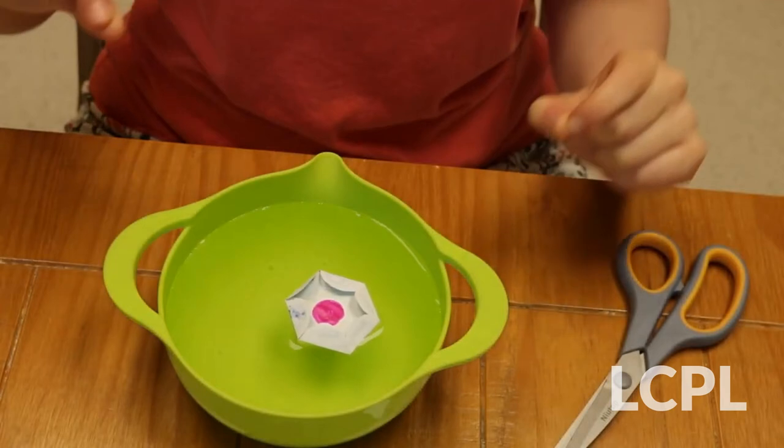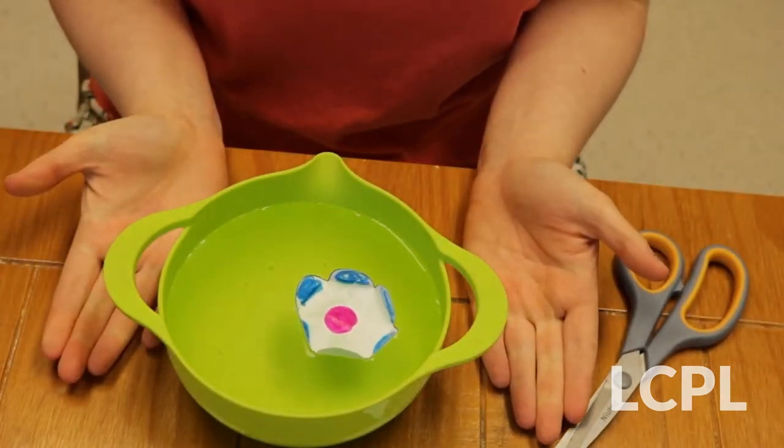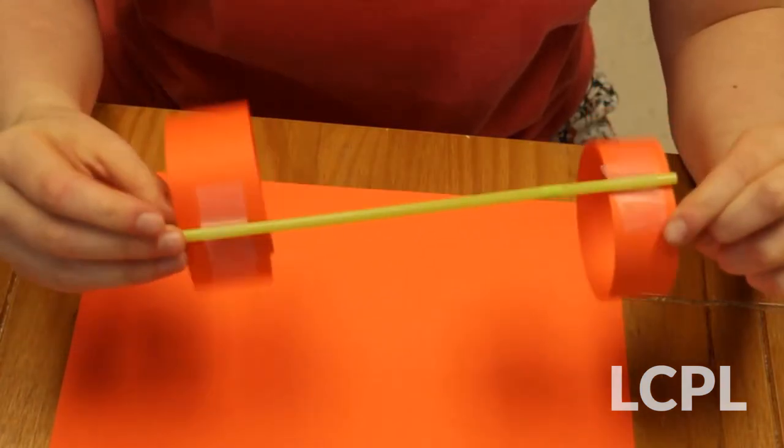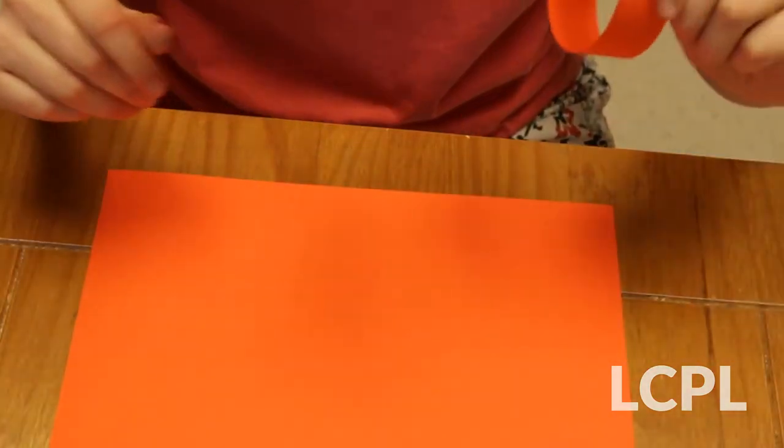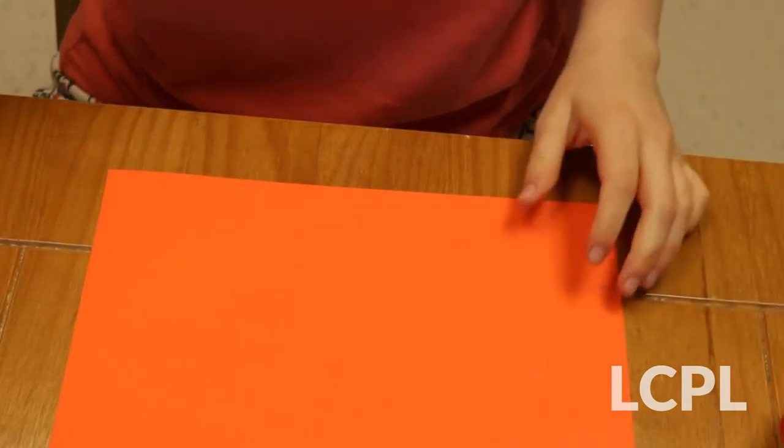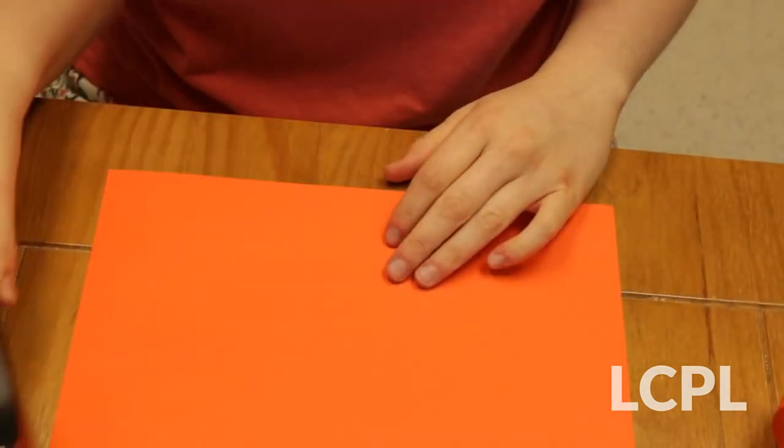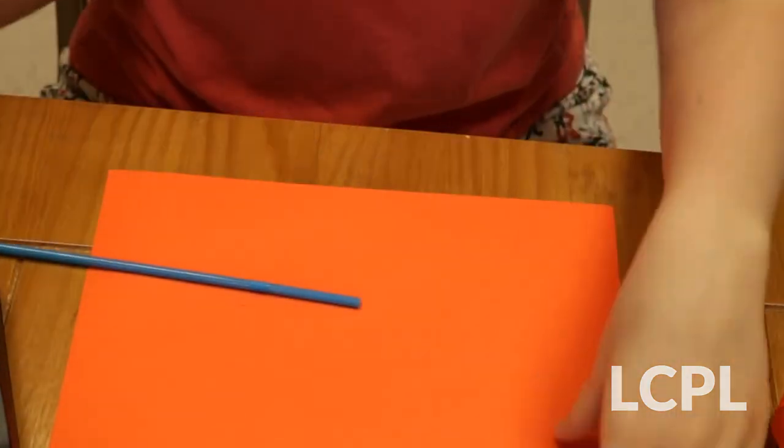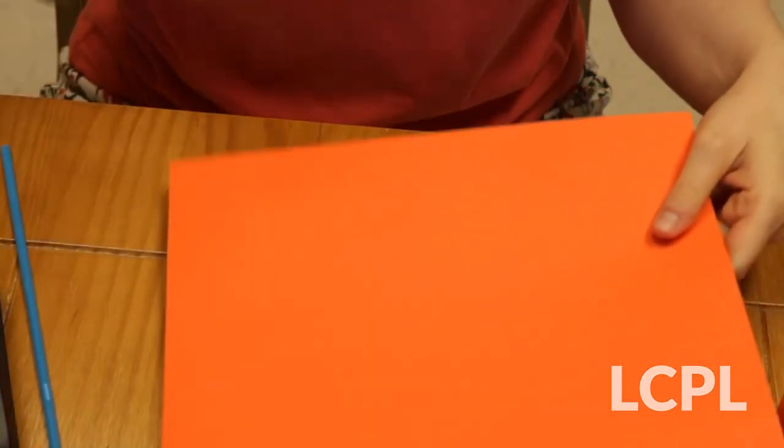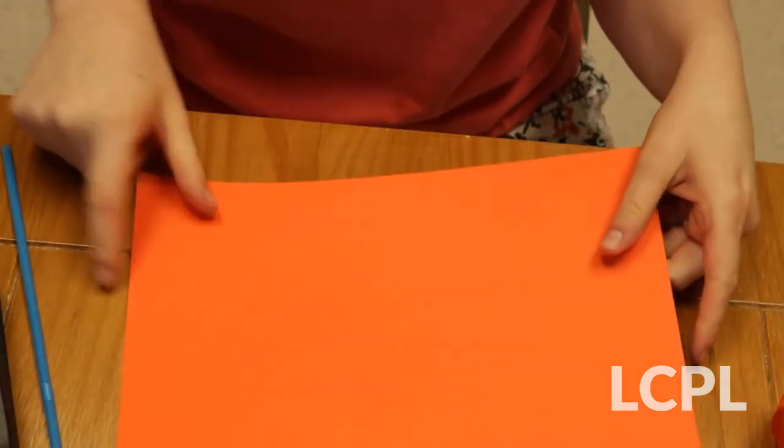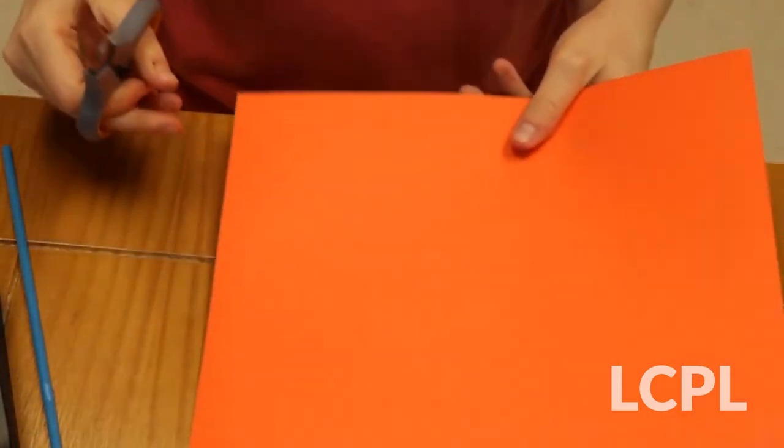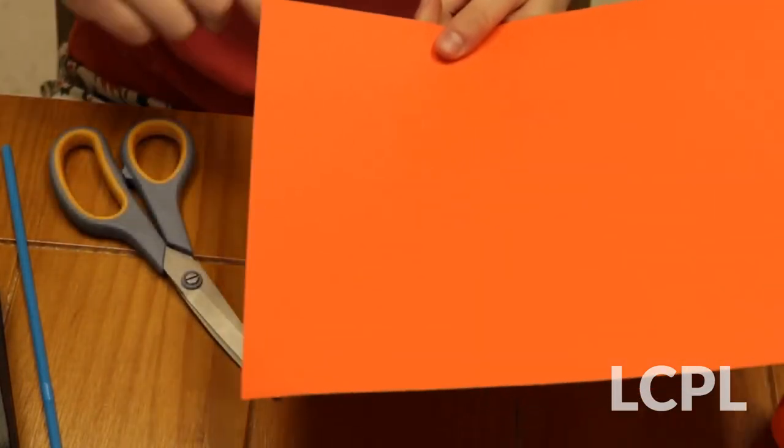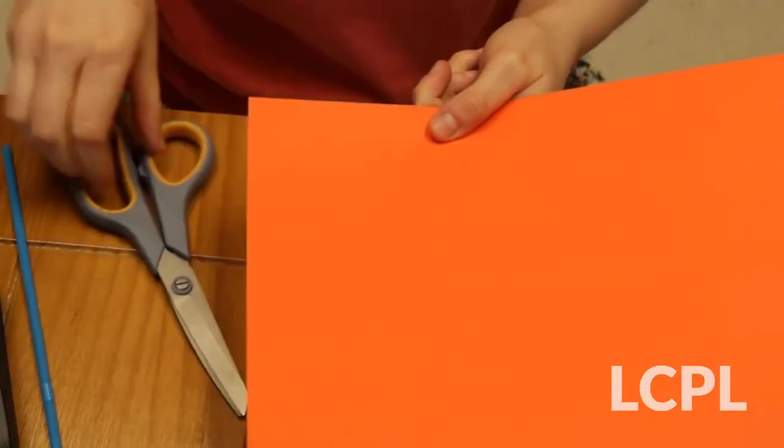Would you believe me if I told you this was a paper airplane? Well I'm going to show you exactly how to make it. So what you'll need is some tape, a straw, some scissors, and some paper. You can use either cardstock or regular paper for this. So what you're going to want to do is cut a strip along the bottom edge of the paper, and you want it to be about two inches thick.